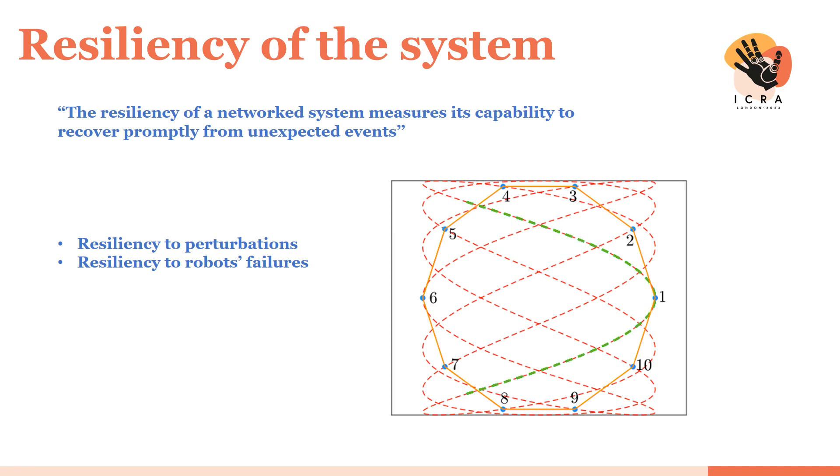In this case we meant that the system is resilient if after an unexpected event, the system is able to go back to the previous equilibrium configuration. In the figure we depict the amount of perturbation that robot 1 can account before violating the sufficient condition for resiliency to perturbation.